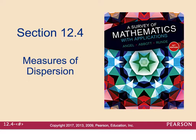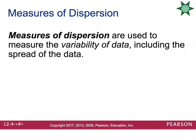Section 12.4 is measures of dispersion. In this section, we're going to look at the data and see how spread out it is in comparison to the average. Measures of dispersion are used to measure the variability, which is the spread of the data.